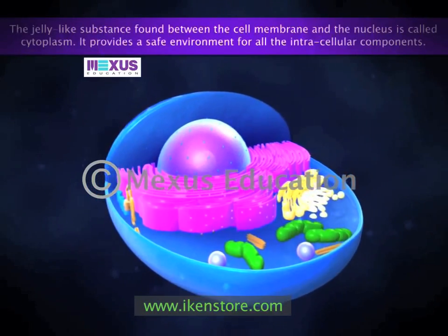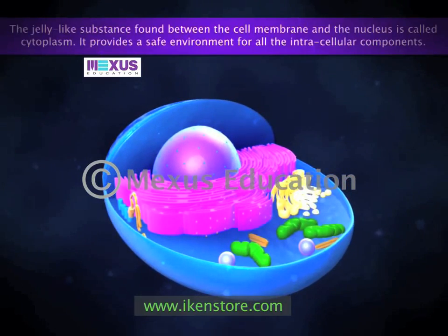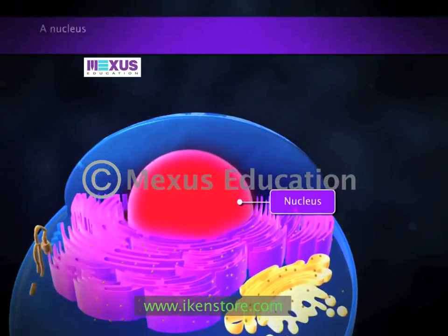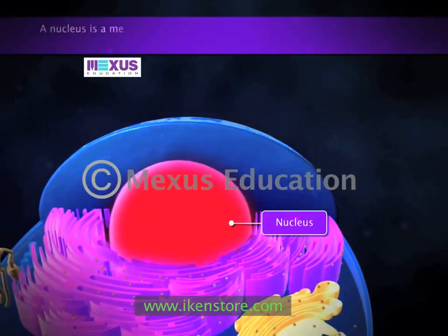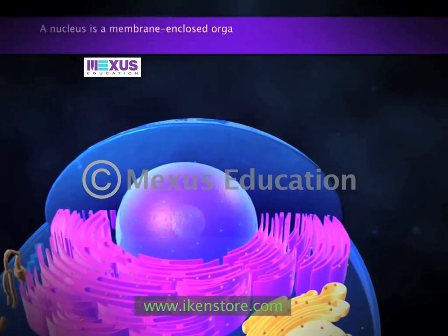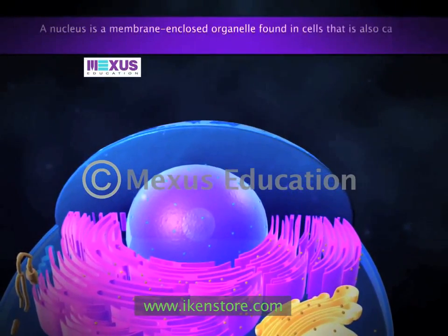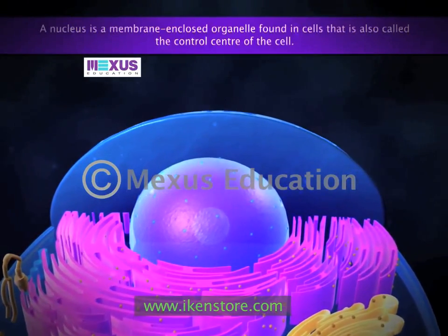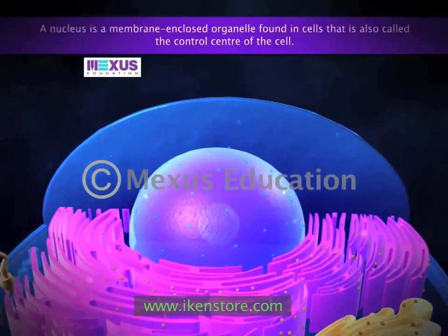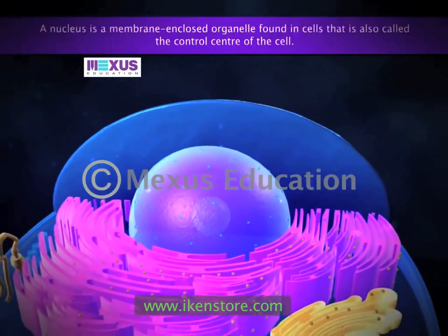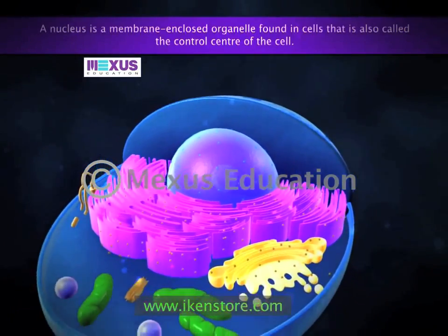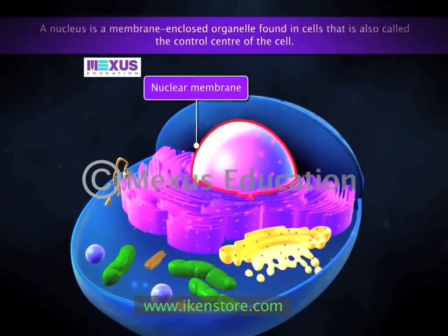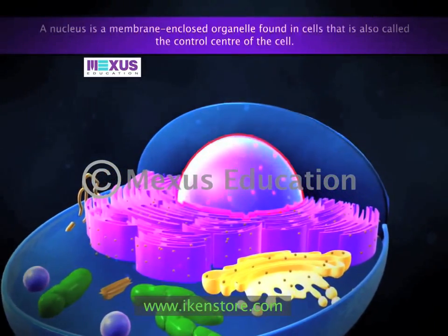The cytoplasm is in motion, moving materials such as nutrients from one part of the cell to another. The nucleus is a very important component of the living cell. It is a membrane-enclosed organelle also called the control center of the cell. It is generally spherical and located in the center of the cell. The nucleus is separated from the cytoplasm by a membrane called the nuclear membrane. There is a smaller spherical body inside the nucleus called the nucleolus.